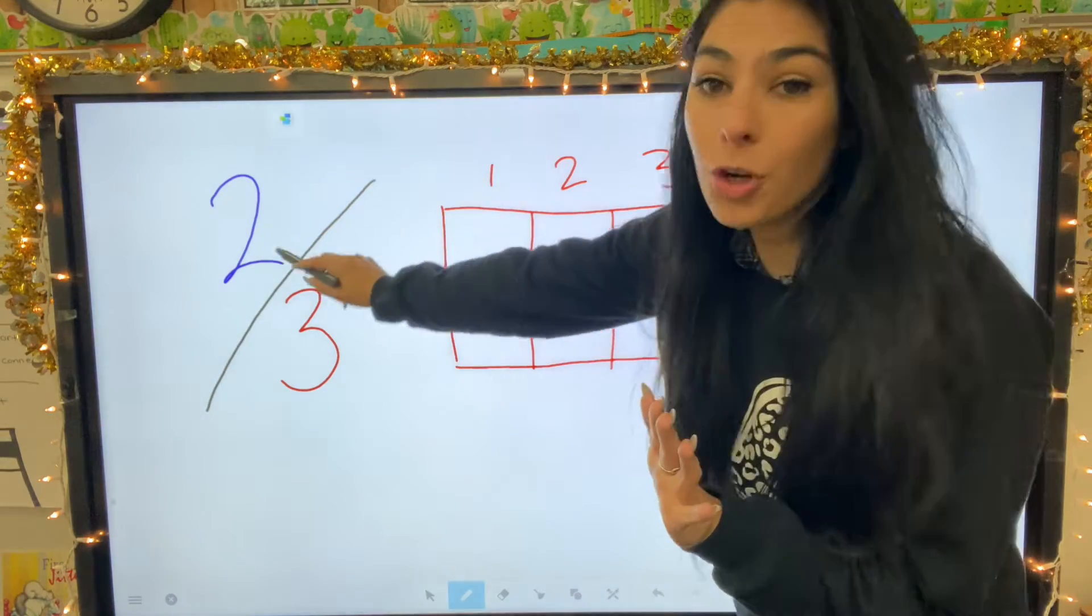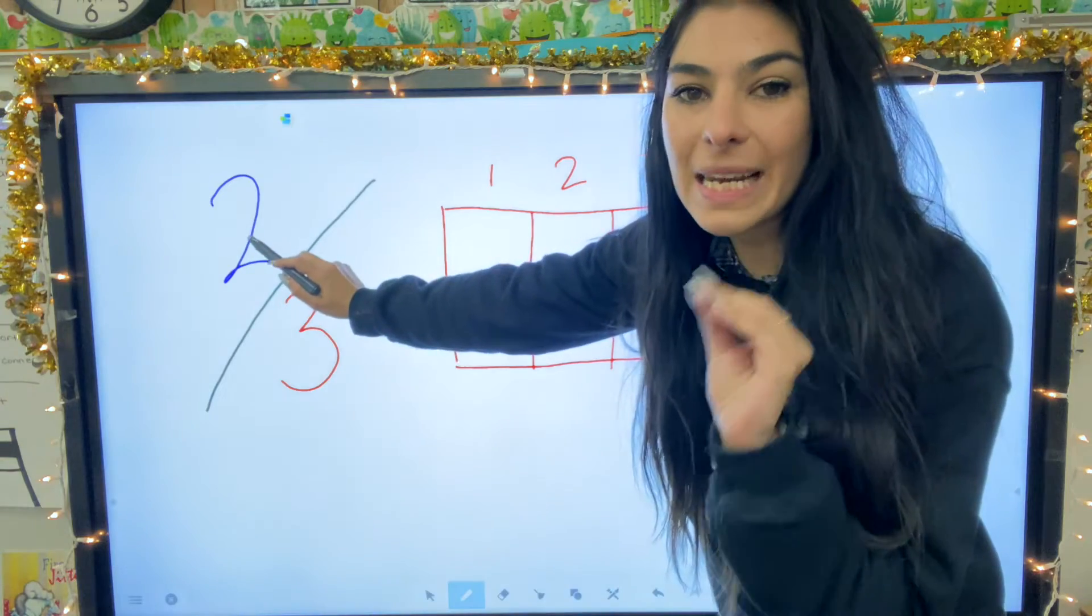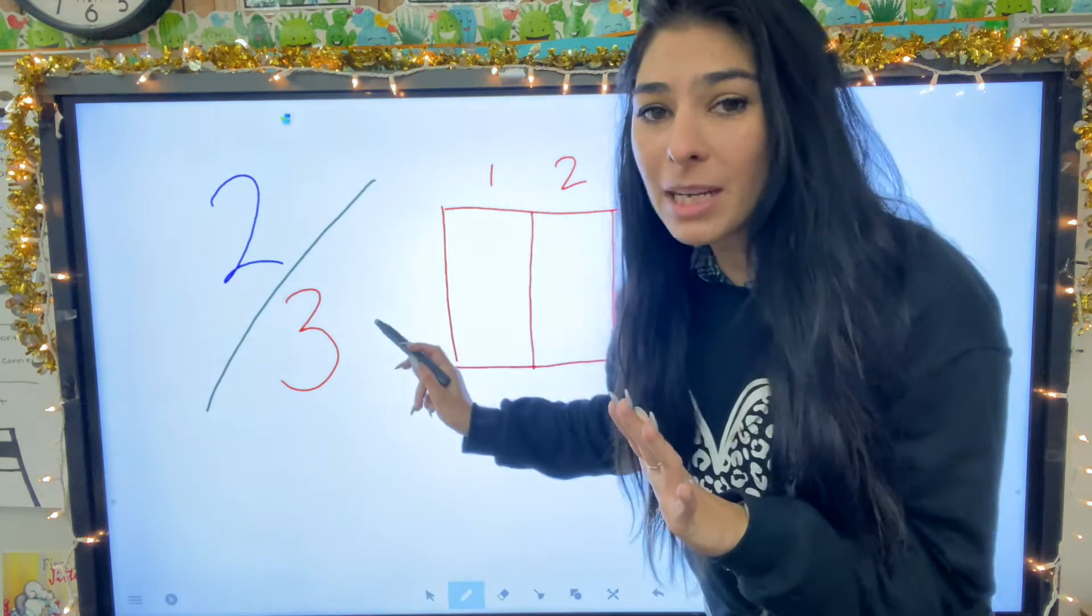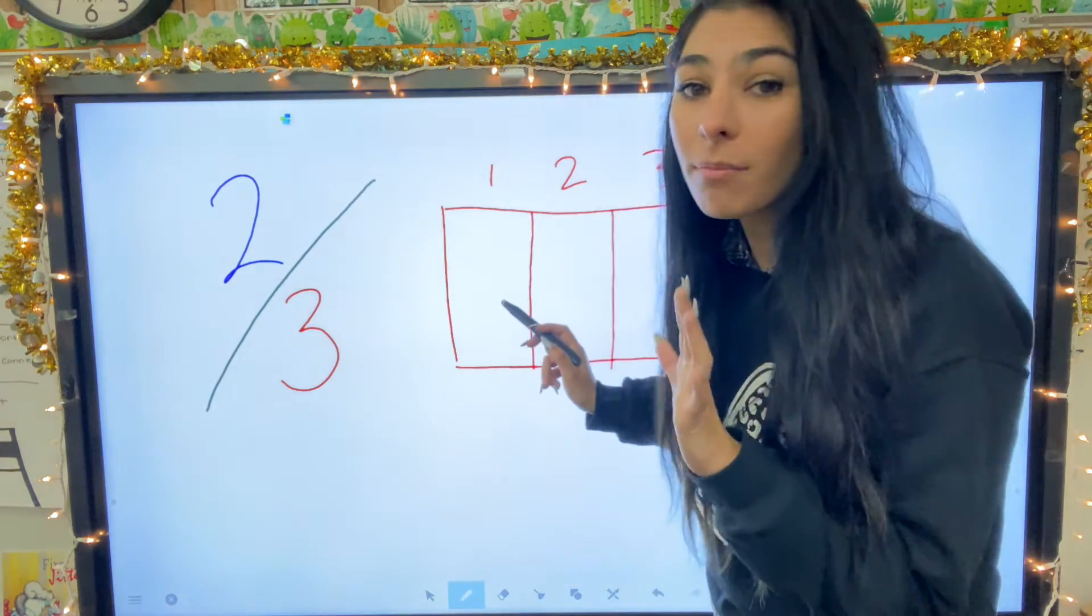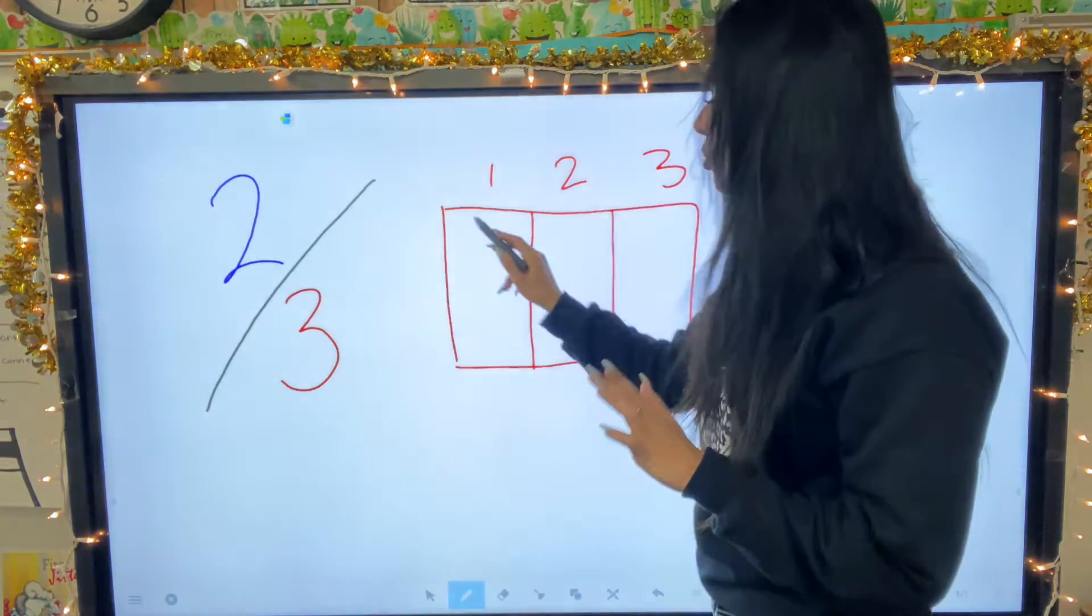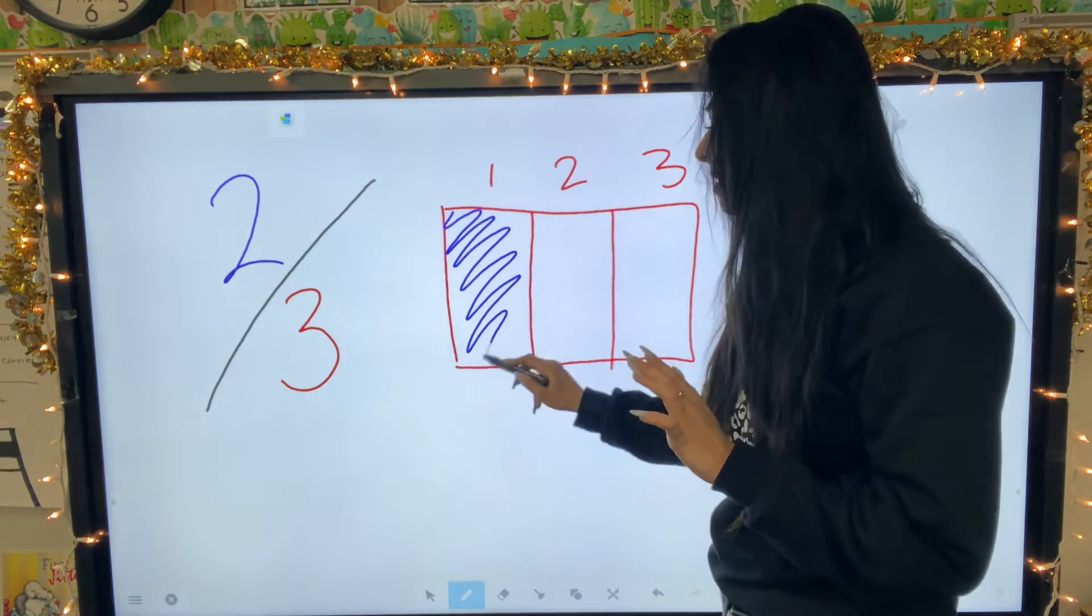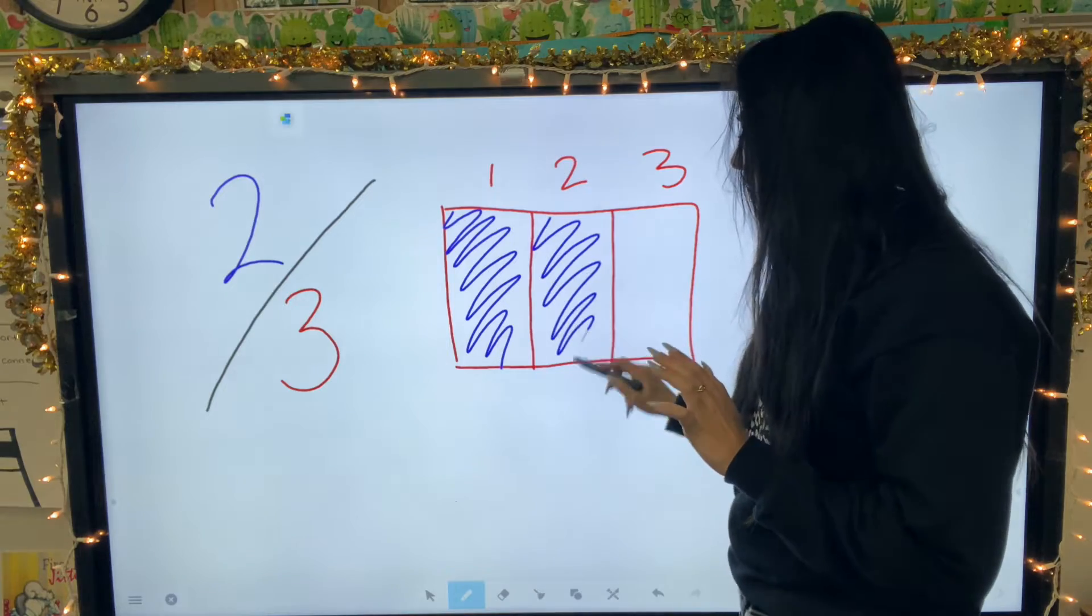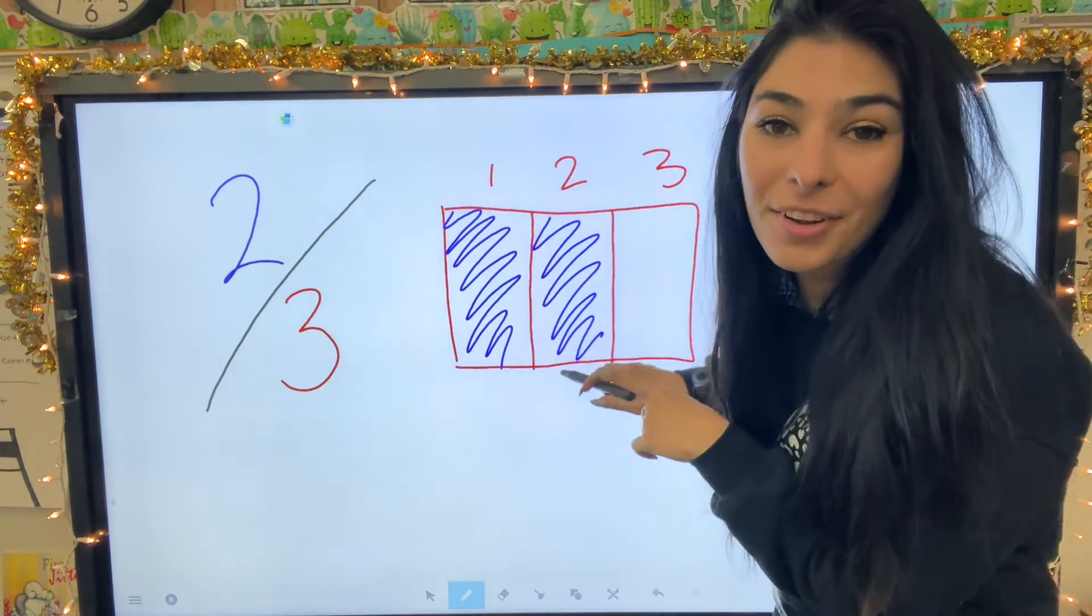But now moving to the numerator. The numerator is the number on top and that's how many pieces of this are shaded in. So the numerator is two. That means two of these sections are colored in. That means two thirds is shaded.